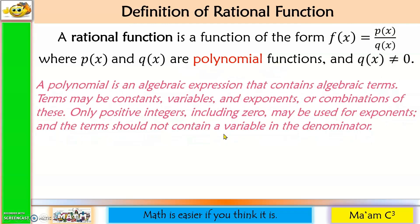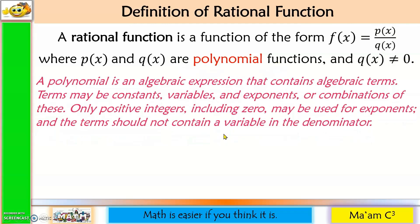What is a polynomial? A polynomial is an algebraic expression that contains algebraic terms. Terms may be constants, variables, and exponents, or combinations of these. Only positive integers, including 0, may be used for exponents, and the terms should not contain a variable in the denominator.